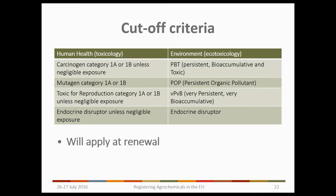To summarise the cut-off criteria: for human health, no approval for carcinogens category 1A or 1B unless negligible exposure; no approval for mutagens category 1A or 1B; no approval for reprotoxins category 1A or 1B unless negligible exposure; and no approval for endocrine disruptors unless negligible exposure. On the environmental side, no approval for PBTs, POPs, VPVBs, or endocrine disruptors. Importantly, these cut-off criteria will only come into force at renewal — so if your substance currently meets the criteria but isn't going through review, it will continue to be approved until it is up for renewal.